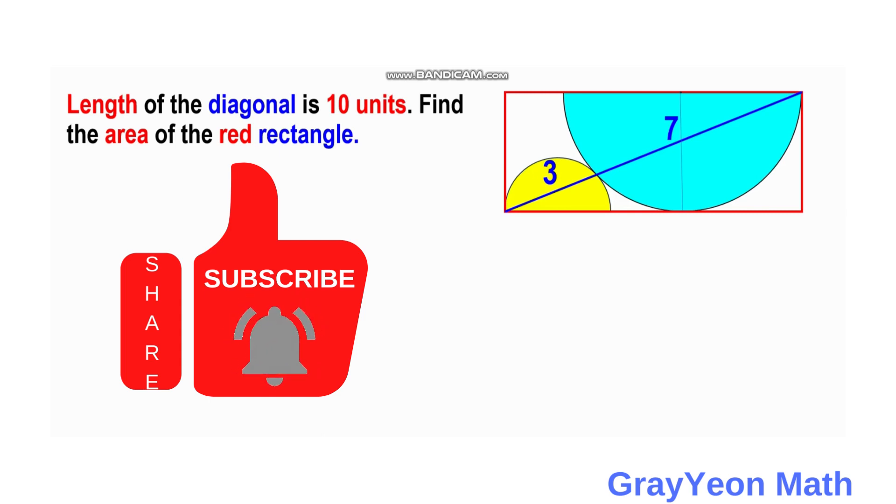Welcome to GrayonMath. We are asked to solve this problem. We have a rectangle and inside this rectangle is a diagonal with 10 units and two semicircles with unknown diameters. But the total for the diagonal is 10, and we are required to find the area of this red rectangle.